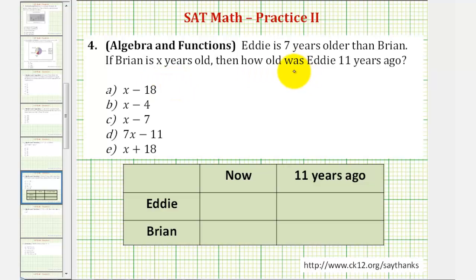So for a question like this, I think it's helpful to organize the information in a table as I have here below, where we'll gather information about Eddie and Brian's age now, and then determine their ages eleven years ago.